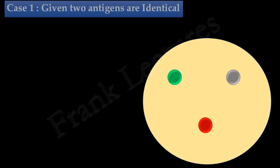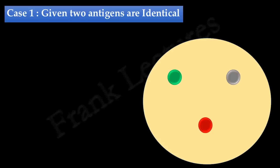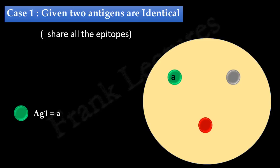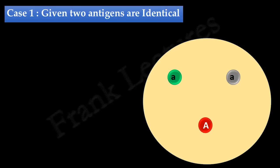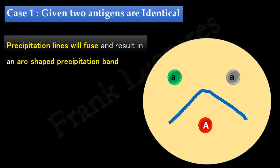Let's first take Case 1: when the given two antigens are identical. By identical we mean that the two antigens share all epitopes or antigenic determinants. Let's represent the first antigen by small letter A. Since the antigens are identical, the second antigen will also be represented by small letter A. The antibody is represented by capital letter A, and it is specific to antigen A. We add antigens and antibodies in their respective wells. Precipitation lines will form at the zone of equivalence. Since the antigens are identical, two precipitation lines will form, but they will fuse and result in an arc-shaped precipitation band.